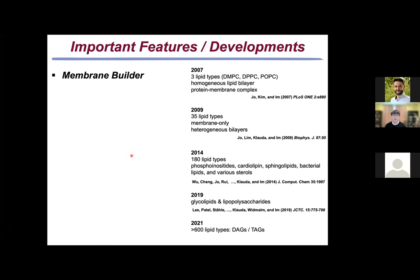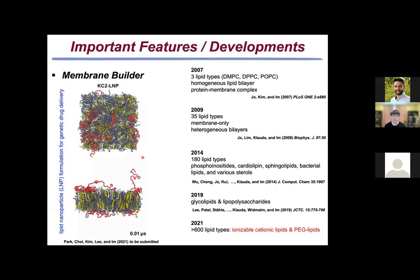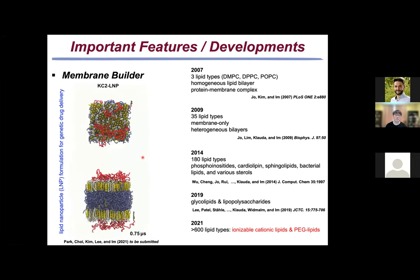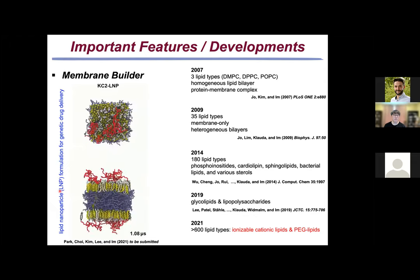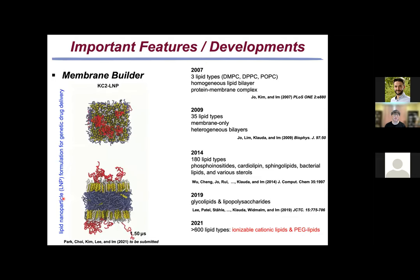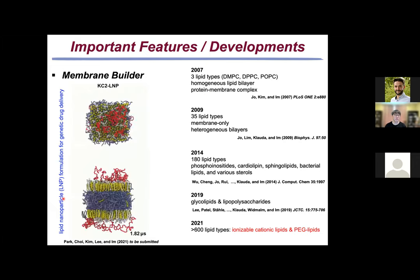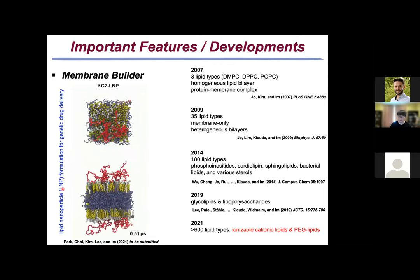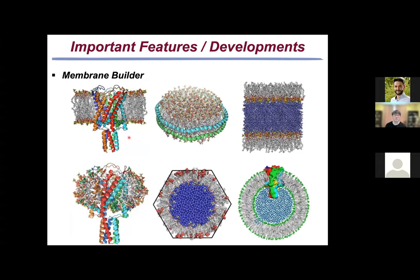We also have diacylglycerol and triacylglycerol that are necessary for lipid droplet modeling. Very recently, we added ionizable or cationic lipids and pegylated lipids with any number of PEG units. Now you can actually build a lipid nanoparticle and examine what components are good for lipid nanoparticle formulation for genetic drug delivery. Most of us have received lipid nanoparticles through COVID-19 vaccines. Membrane builder also allows you to model systems as nanodiscs, detergent micelles, and even vesicles.